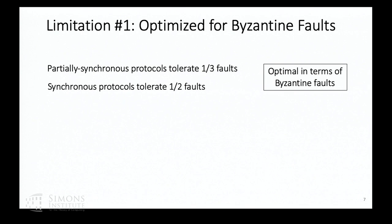What do you mean the client needs to agree? The client doesn't even know, right? It just sends requests and receives answers. Basically, it needs to agree in the sense that if it believes there are a larger number of faults — say you assume partial synchrony and one third faults, but the client believes there are actually 40 percent faults — then the system is not usable from the perspective of the client. So if it wants to use the system, the beliefs are imposed on the client.